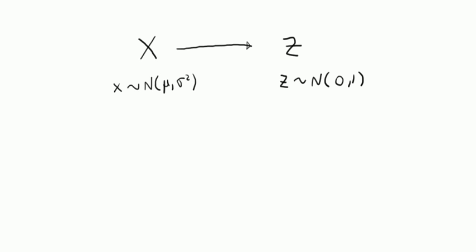Hi everyone, we're continuing on the theme of standardization and the z-score. To recap, we have a random variable x which is normally distributed with mean mu and variance sigma squared.